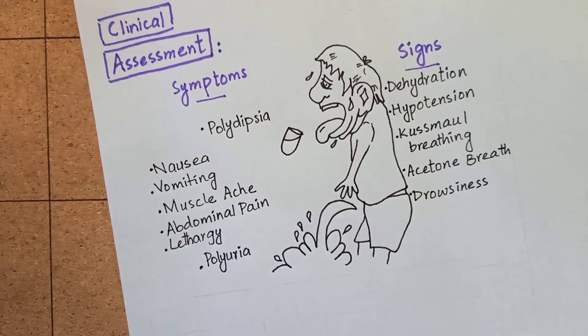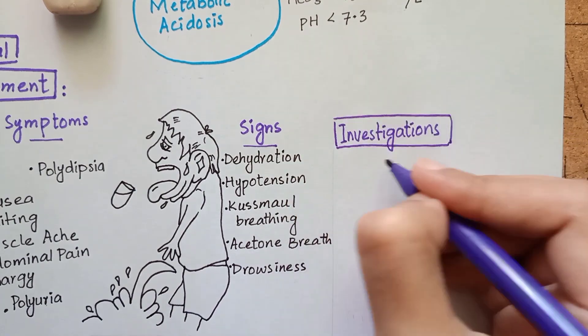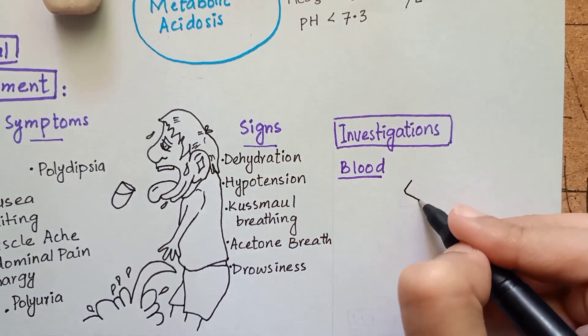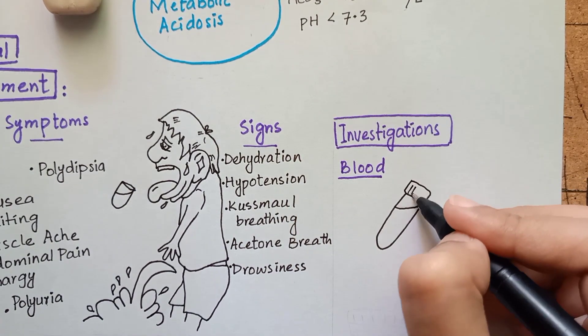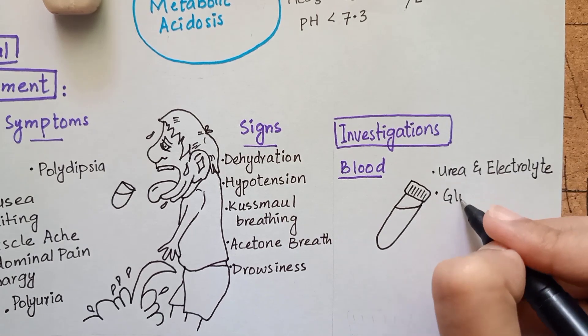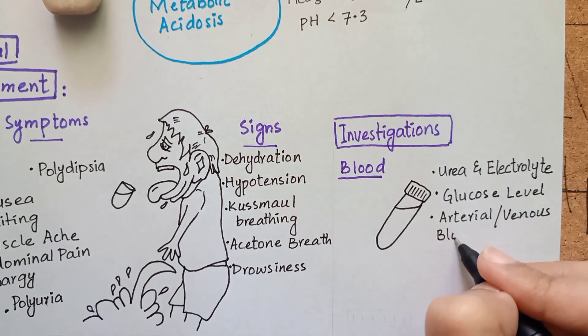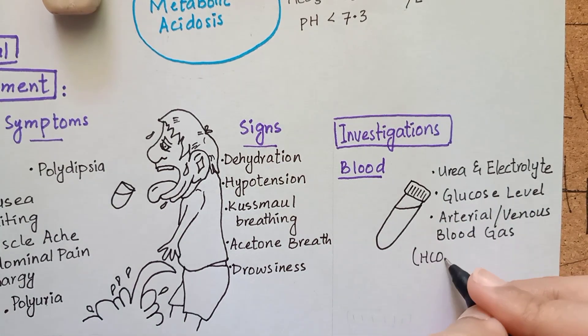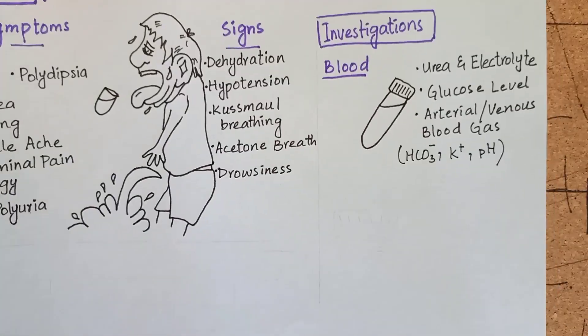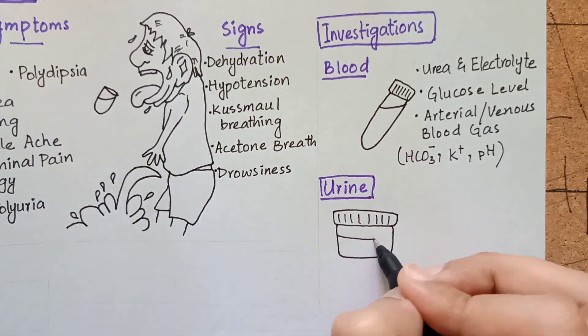After that, you will get the essential investigations done. That includes blood test for urea and electrolytes, blood glucose levels, arterial or venous blood gas for bicarbonate, potassium and pH assessment. Then there is urine analysis for ketones.